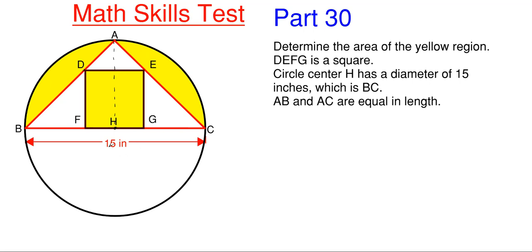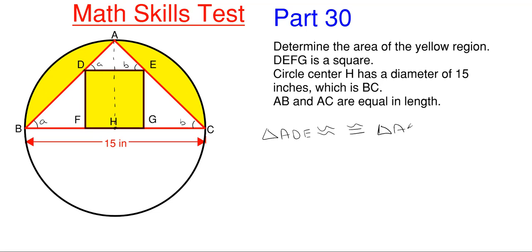Since DEFG is a square and DF and EG are all parallel and equal in lengths, we're going to have similar triangles forming. These two angles we call angle A — this angle down here is B, and the angle up here would also be B, since DE is parallel to the overall BC. So we're going to have similar triangles.